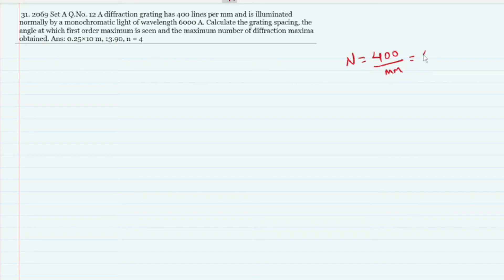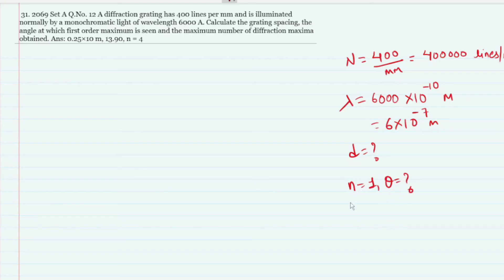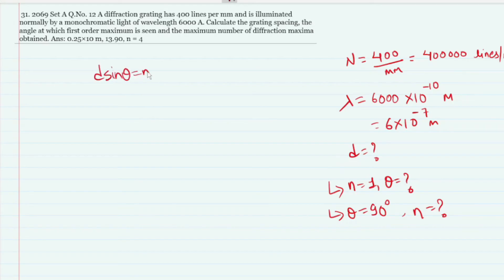The grating has 400 lines per mm, which converts to a certain number of lines per meter. It is illuminated normally by monochromatic light of wavelength 6000 Ångströms. Since 1 Å = 10⁻¹⁰ m, this is 6 × 10⁻⁷ meters. We calculate the grating spacing d = 1/N and find the angle for the first-order maximum.